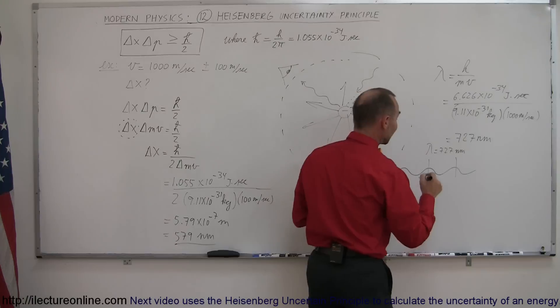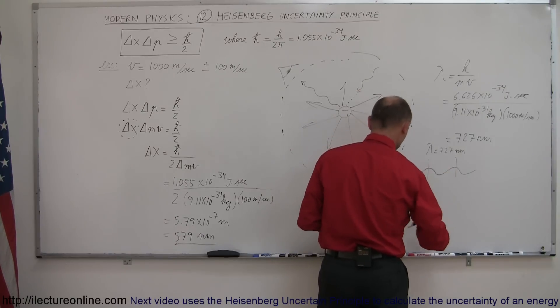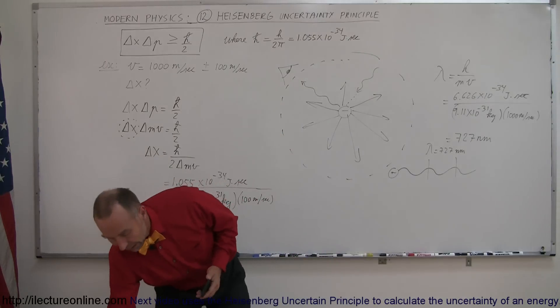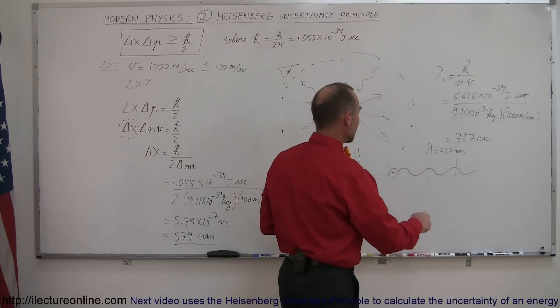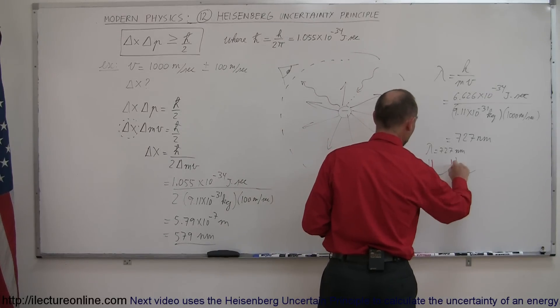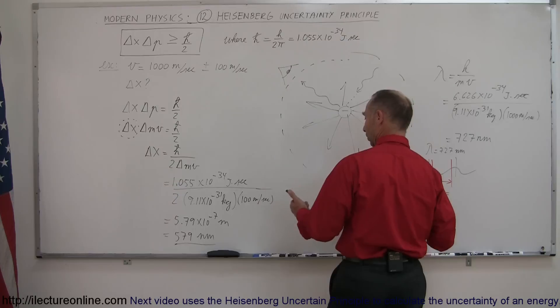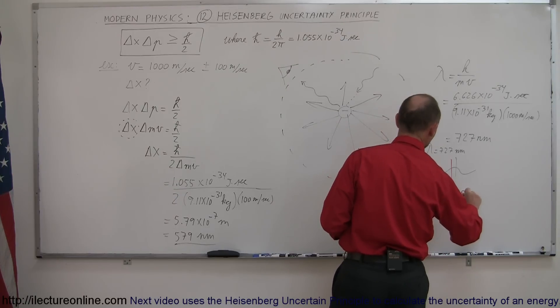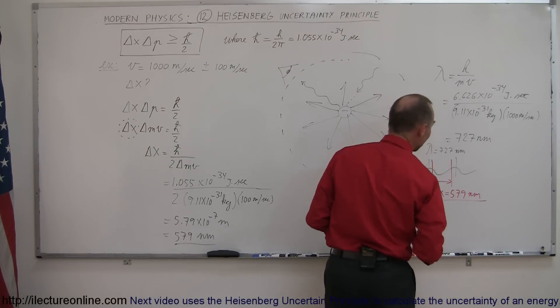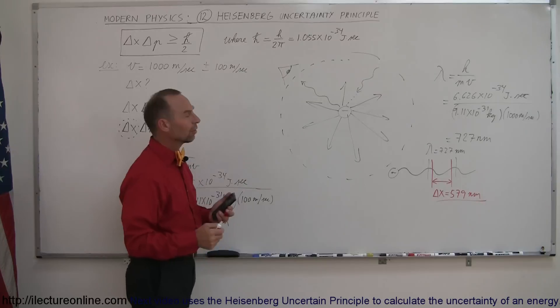Where would we find the electron? Well, somewhere in this neighborhood, so that would be the delta x, which in this case was 579 nanometers. And that's how you get a feel for how that uncertainty works.